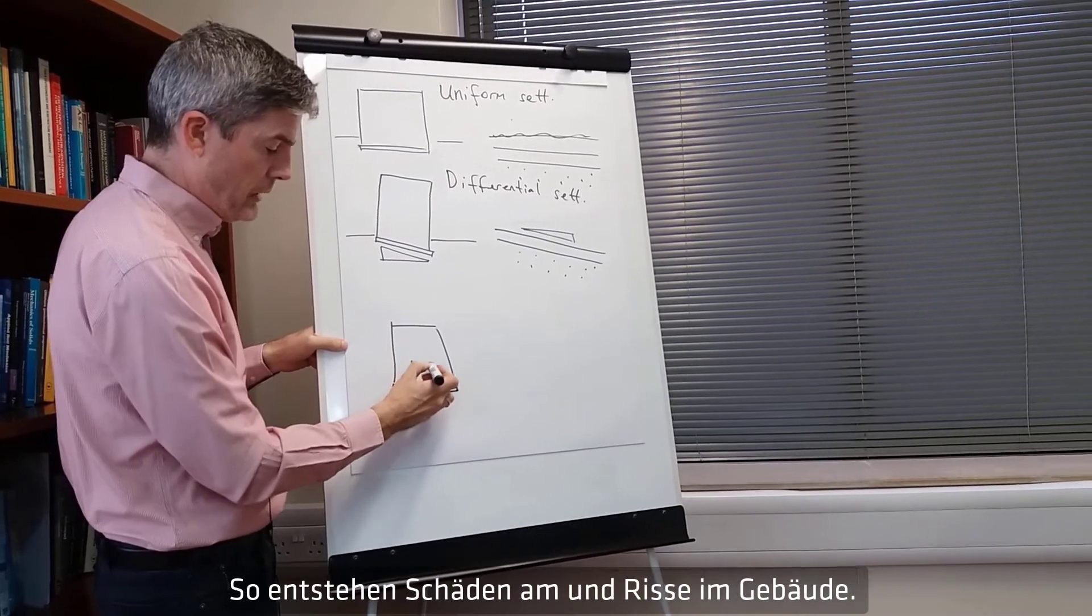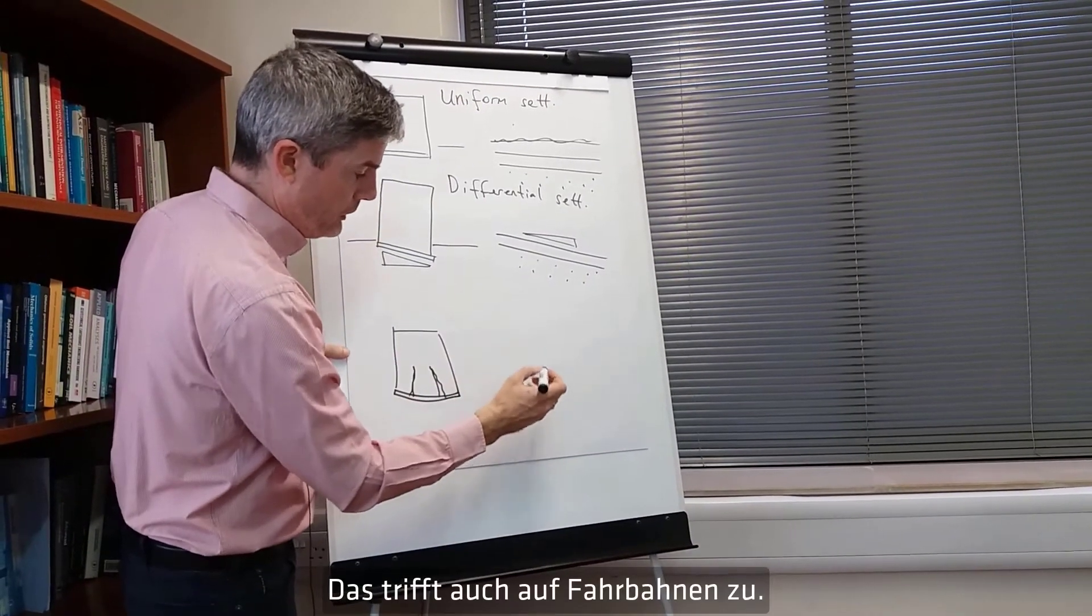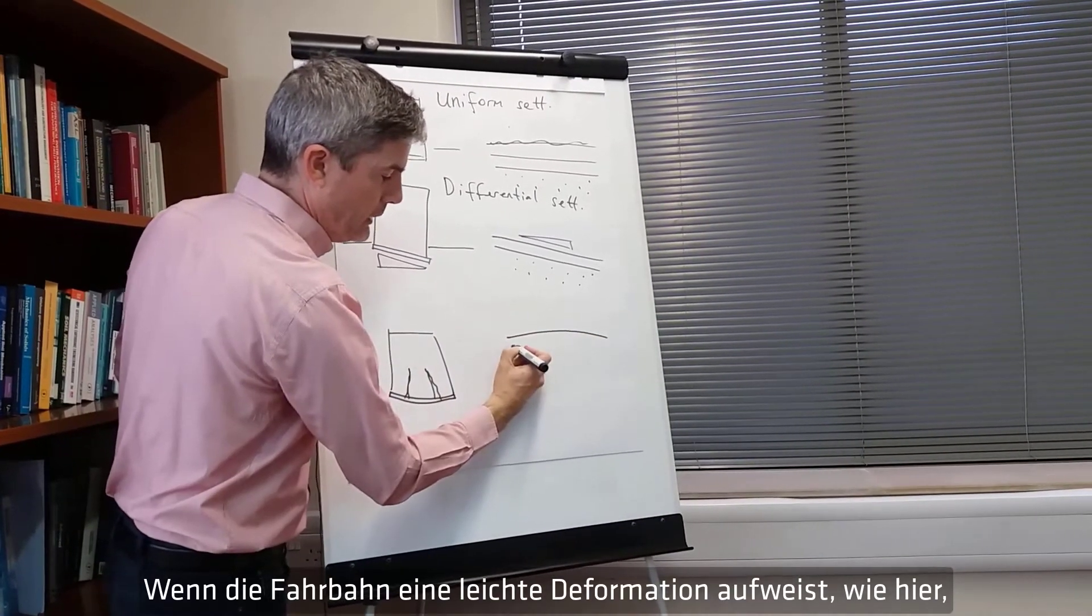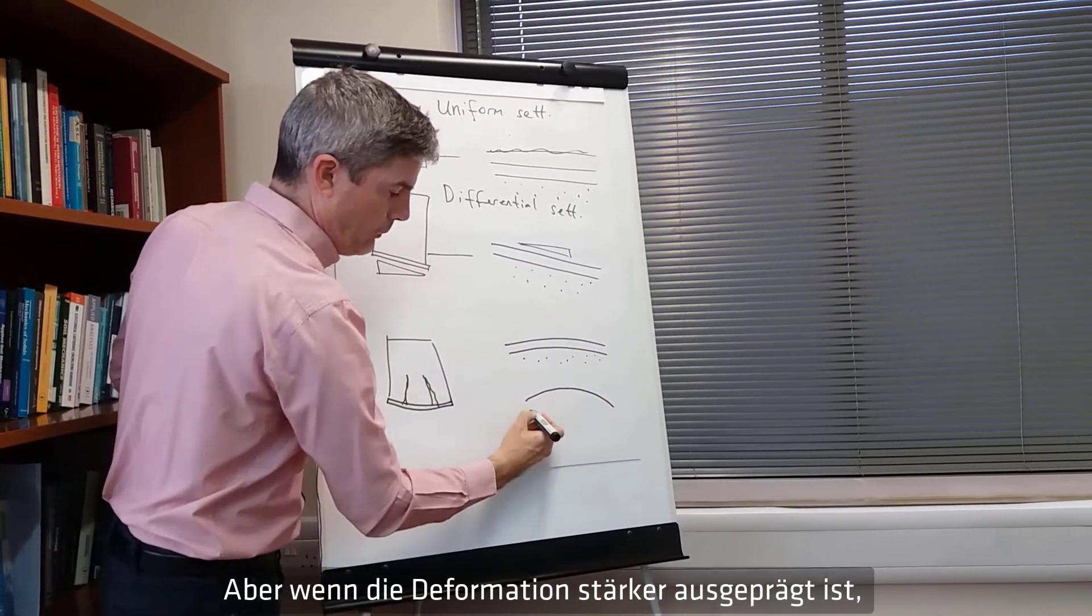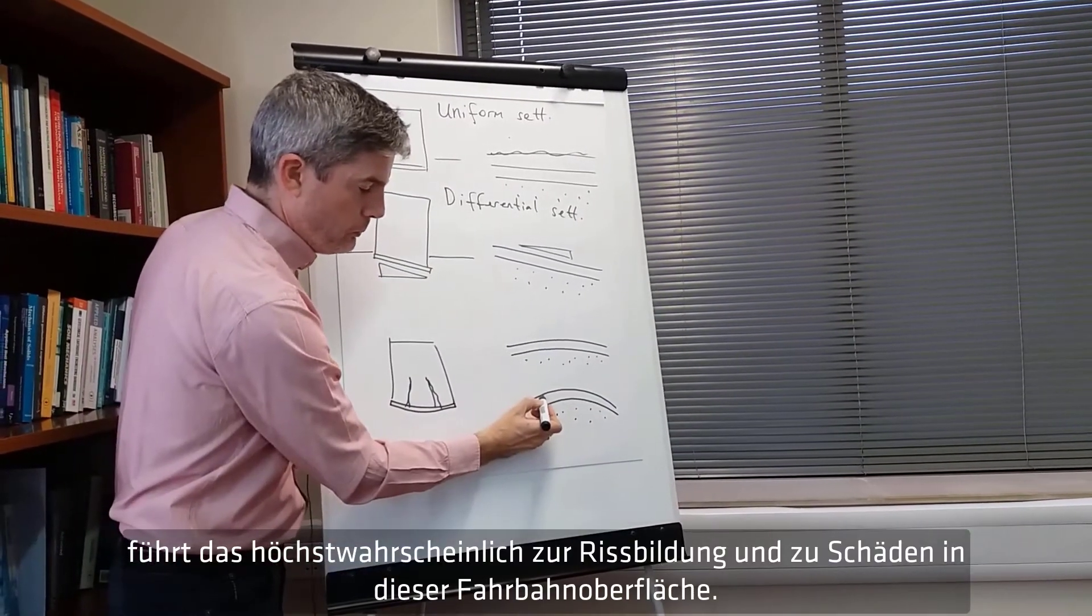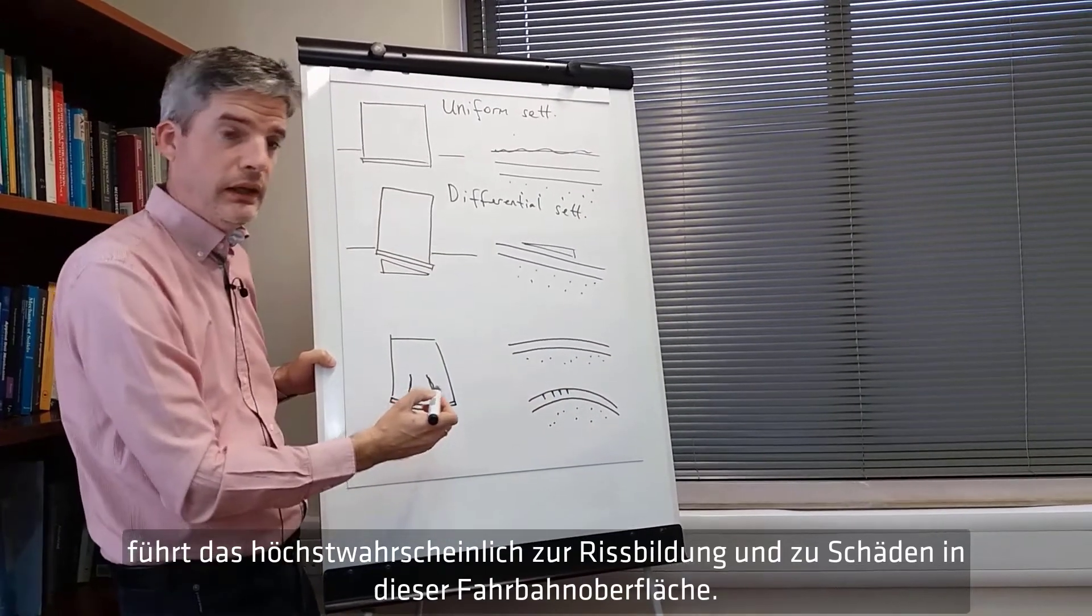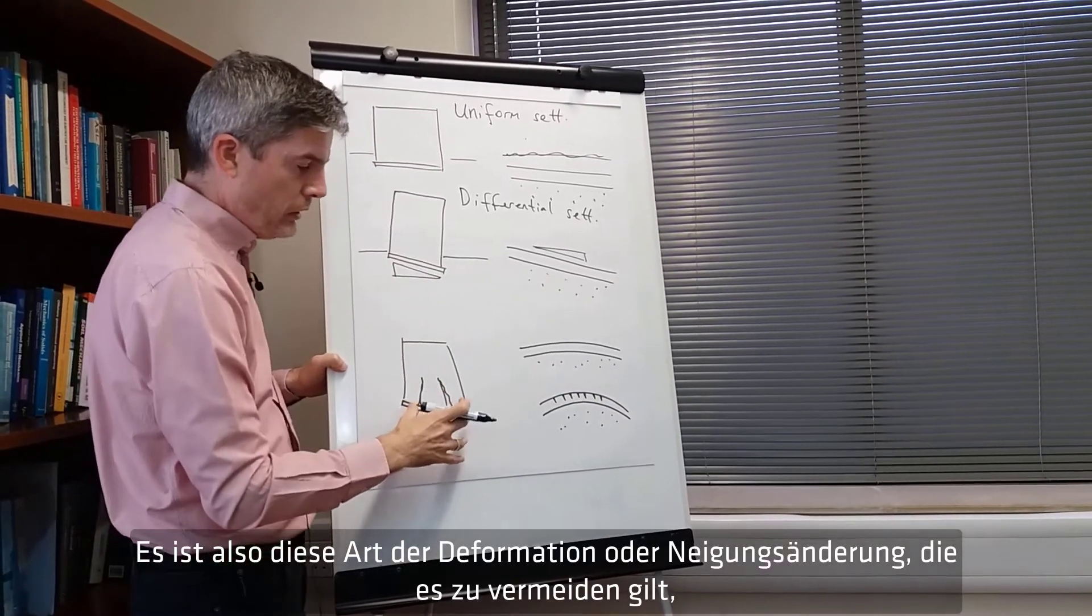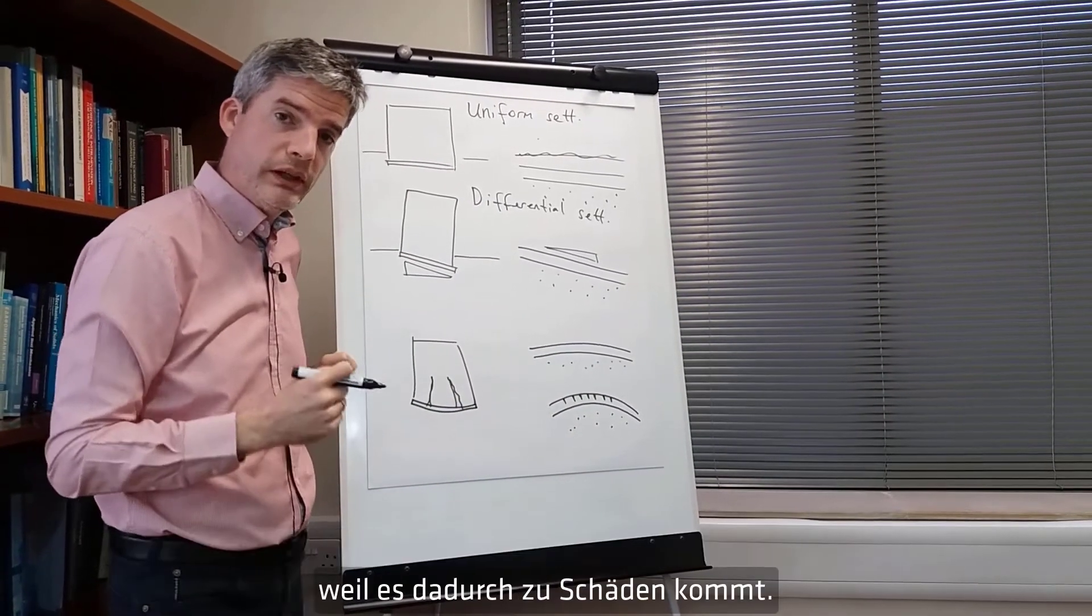The same goes for a pavement. If the pavement has a low curvature like that it may be able to sustain that okay. But if it has a higher curvature, exaggerated there, that is going to quite likely cause cracking and damage in that highway pavement surface. So it is really the curvature or the change in slope that we want to avoid because that's what causes the damage.